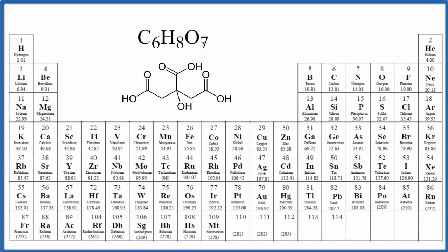In this video, we'll calculate the molar mass for C6H8O7. This is citric acid.